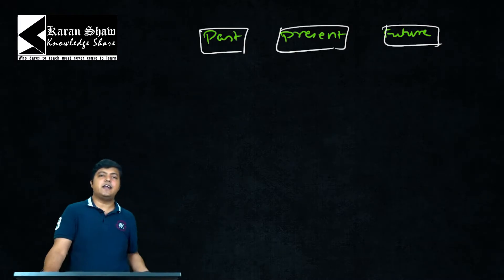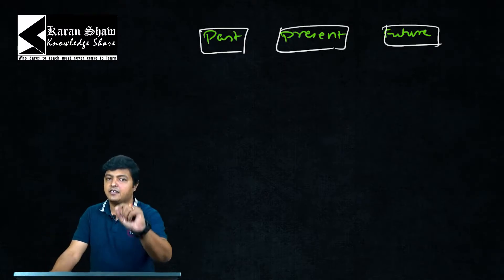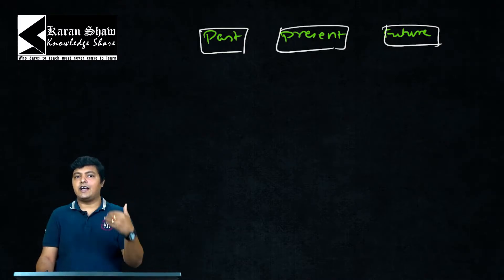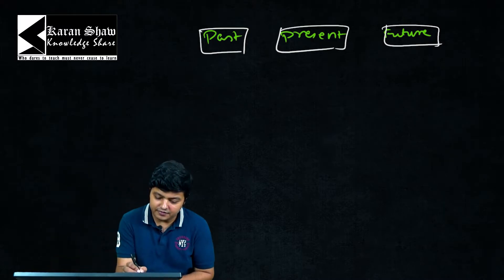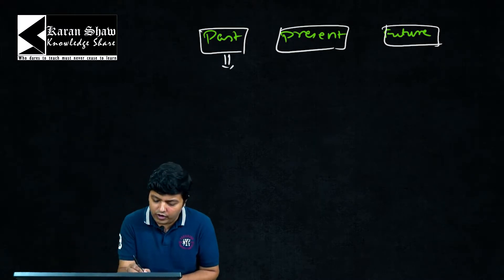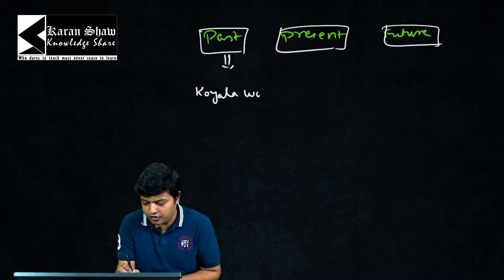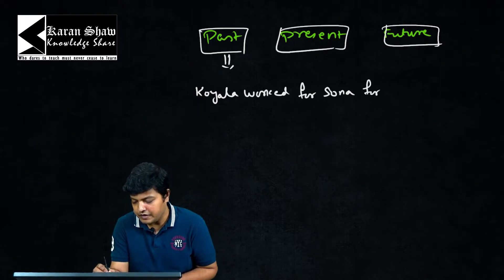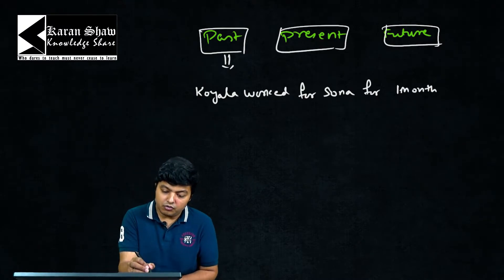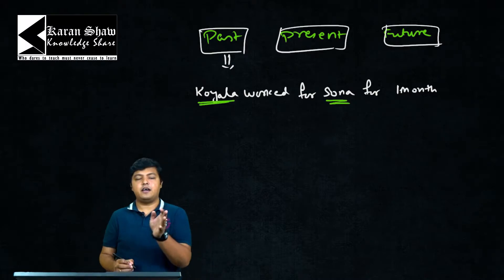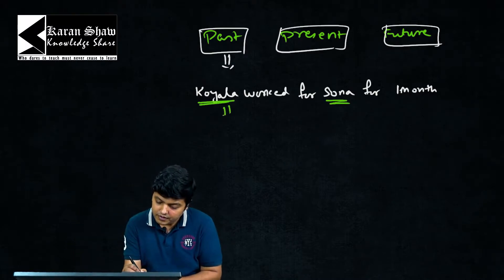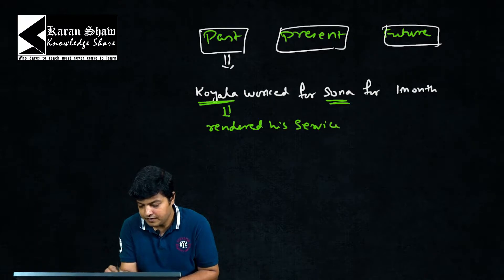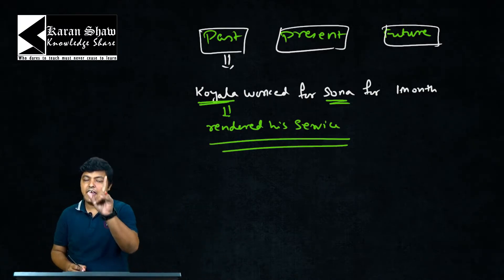In the past, if someone has rendered a service for someone, it becomes past consideration. For example, my characters — Sona, Chandi, and Koila. Suppose Koila worked for Sona for one month. So Koila rendered his service to Sona for one month.